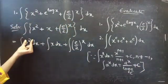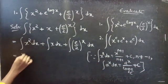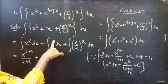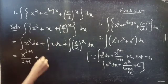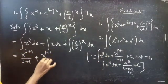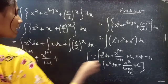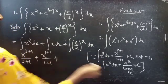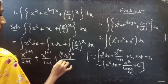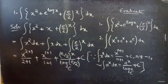Since n equals 2, which is not equal to minus 1, we can apply the formula and get x power 2 plus 1 by 2 plus 1. For the integral of x power 1, n equals 1 so we apply the formula and get x power 1 plus 1 by 1 plus 1. For the last term, consider e by 2 as a constant a, so applying the formula we get the constant power x by log of the constant to the base e plus constant c.